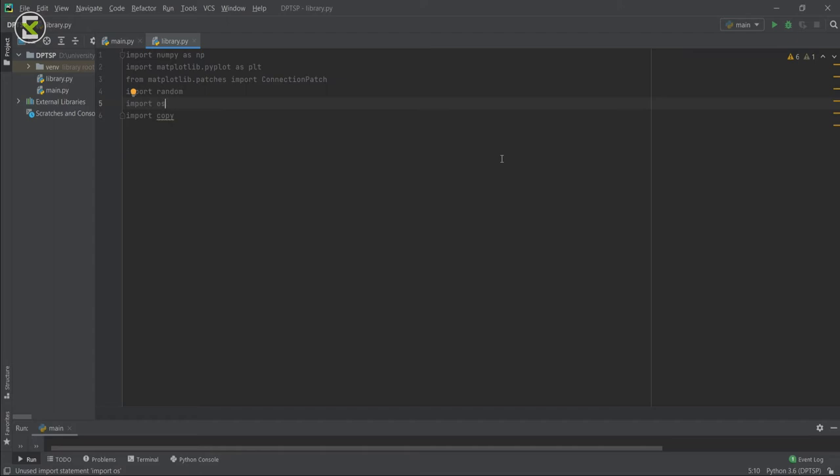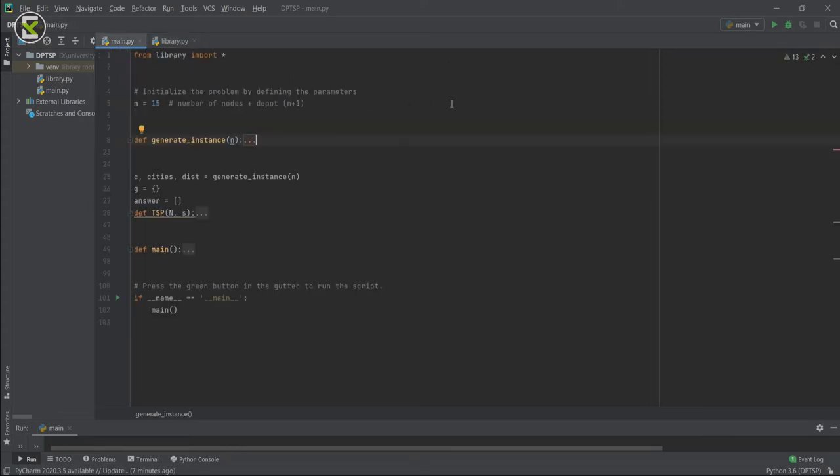Okay, now I'll explain the code that I wrote for solving TSP using dynamic programming. So we have two Python files. One is our library file and the other one is our main file. In the library file, we import the necessary libraries, which the main ones are numpy and matplotlib. Then in the main file, we have three functions. The first function generates our cities for us and it is called before we solve the TSP. It returns a location array of cities and distances matrix.